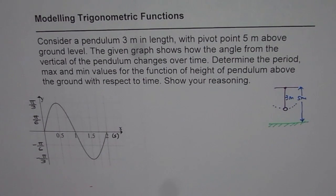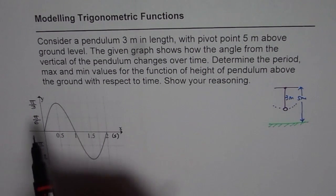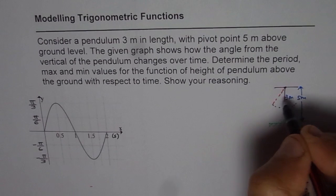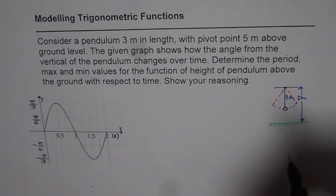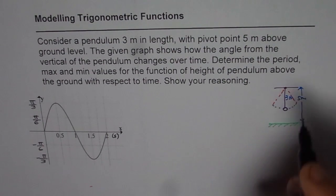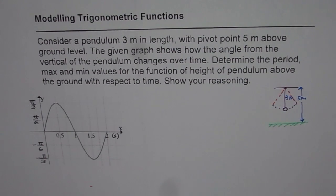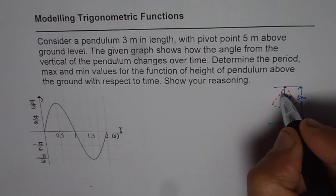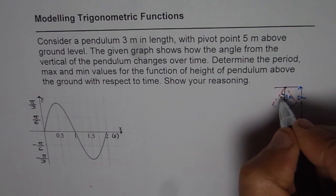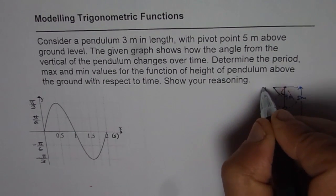So the two extreme positions for the pendulum are making an angle of pi by three. So let us consider negative part will be going towards left, positive towards right. In any case, the maximum angle will be pi by three. So let's say this angle is pi by three.